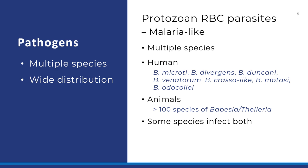Babesia pathogens are red blood cell parasites and they produce symptoms that are very malaria-like. Babesia species have been subdivided into four clades. The human pathogens are listed here. Babesia microti is the most prevalent and well-described species and is classified as a clade one organism. More than 100 species of Babesia and Theileria infect animals. Some species infect both humans and animals. Distribution of these pathogens is quite wide.